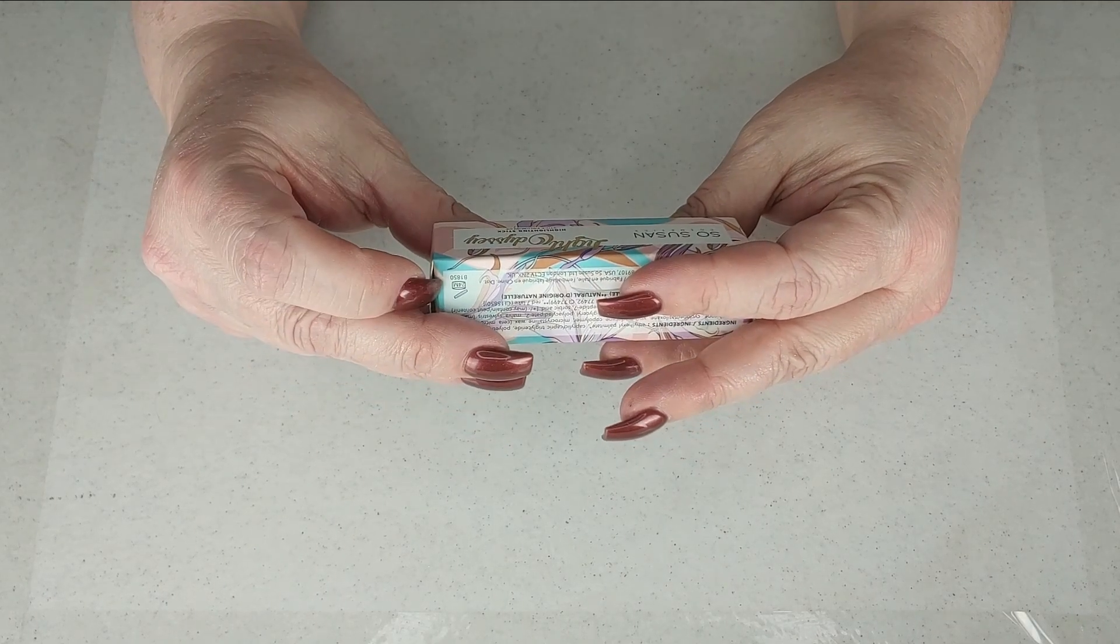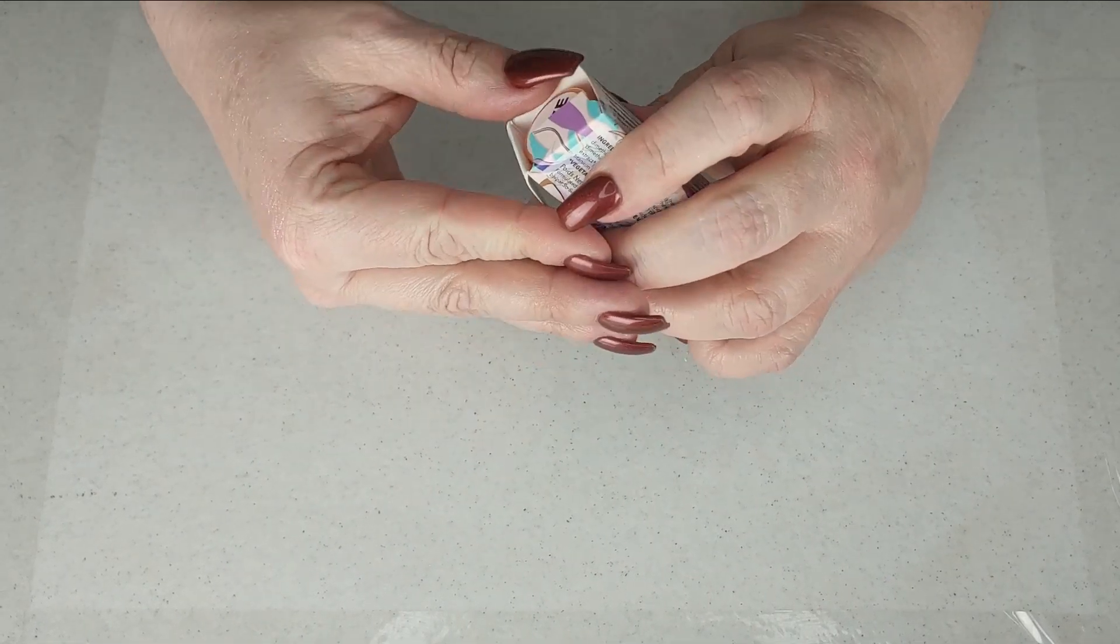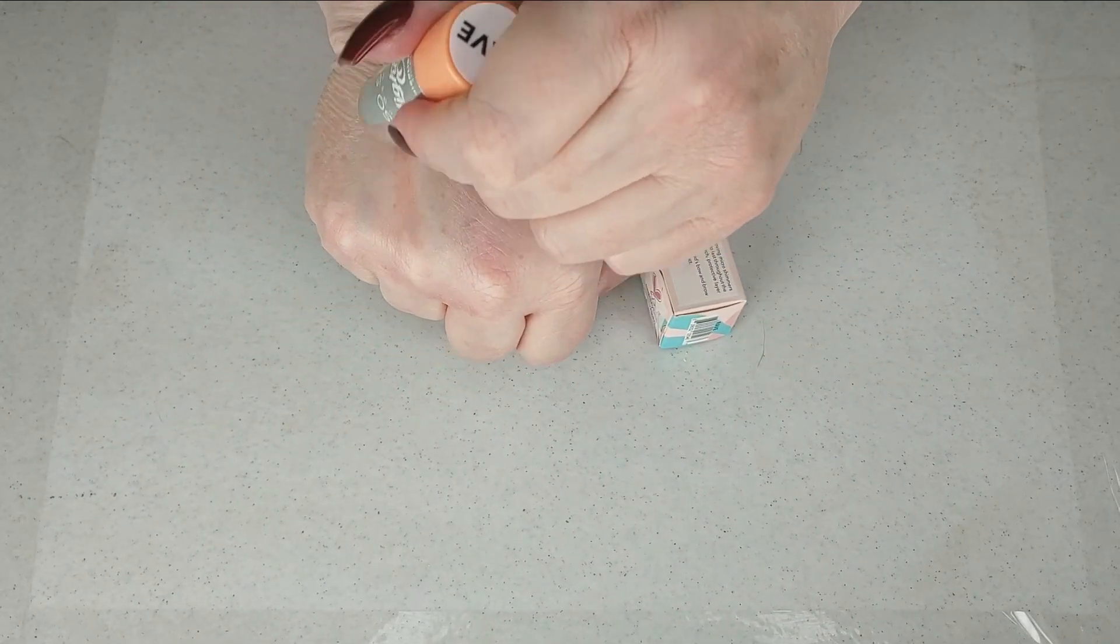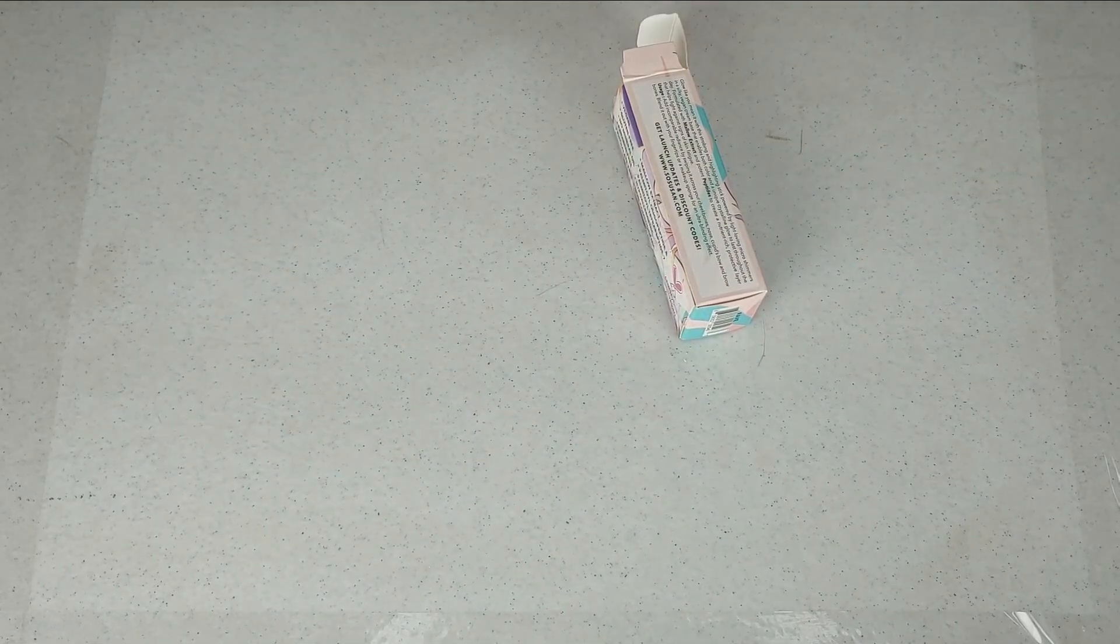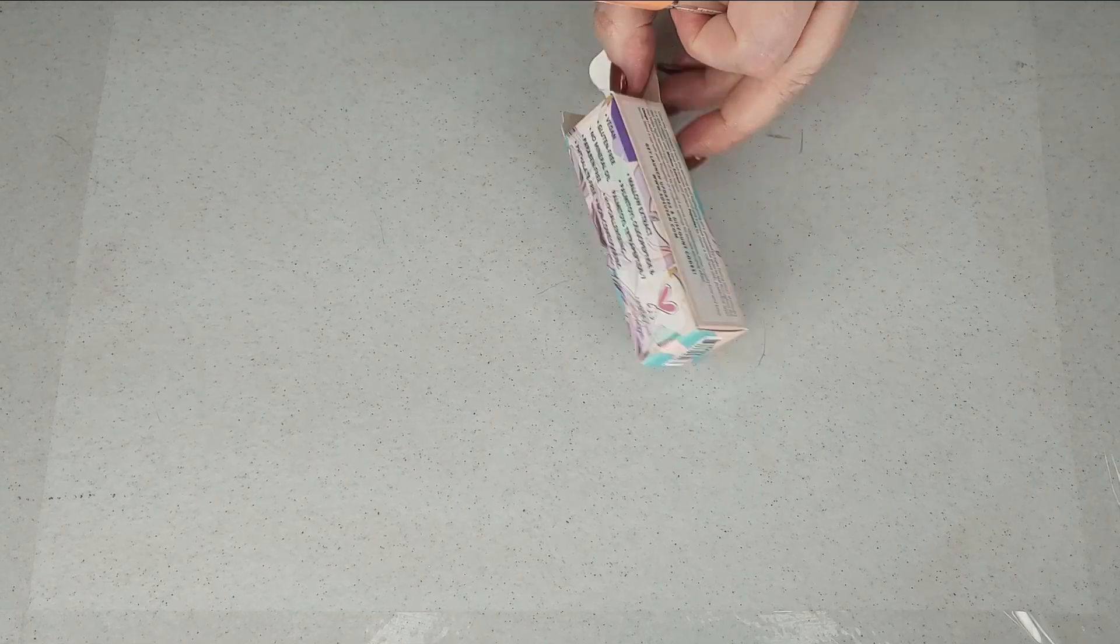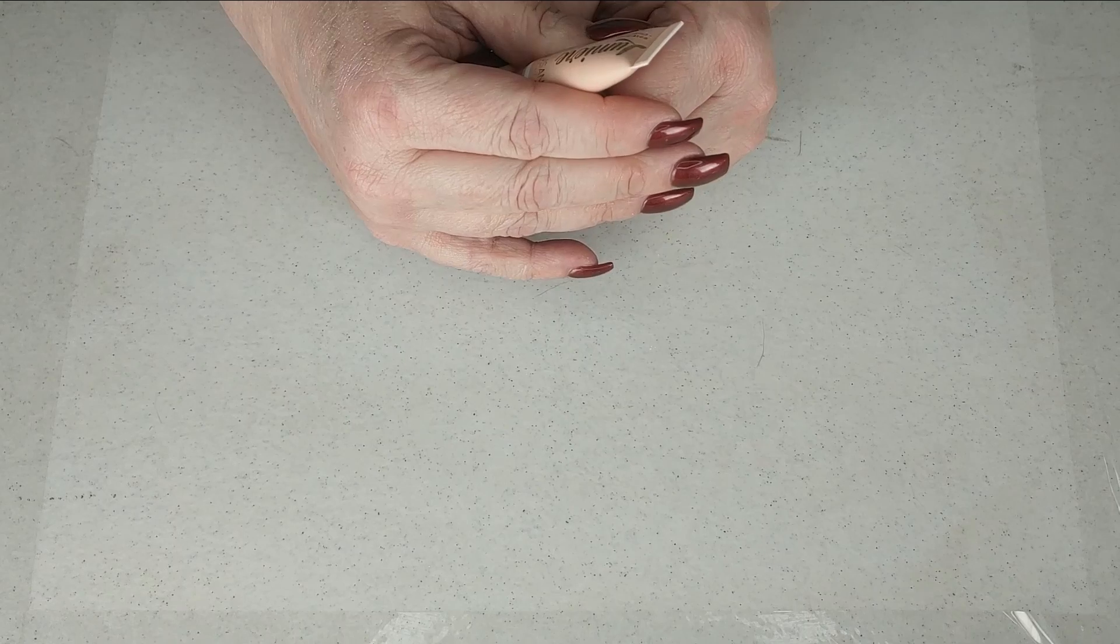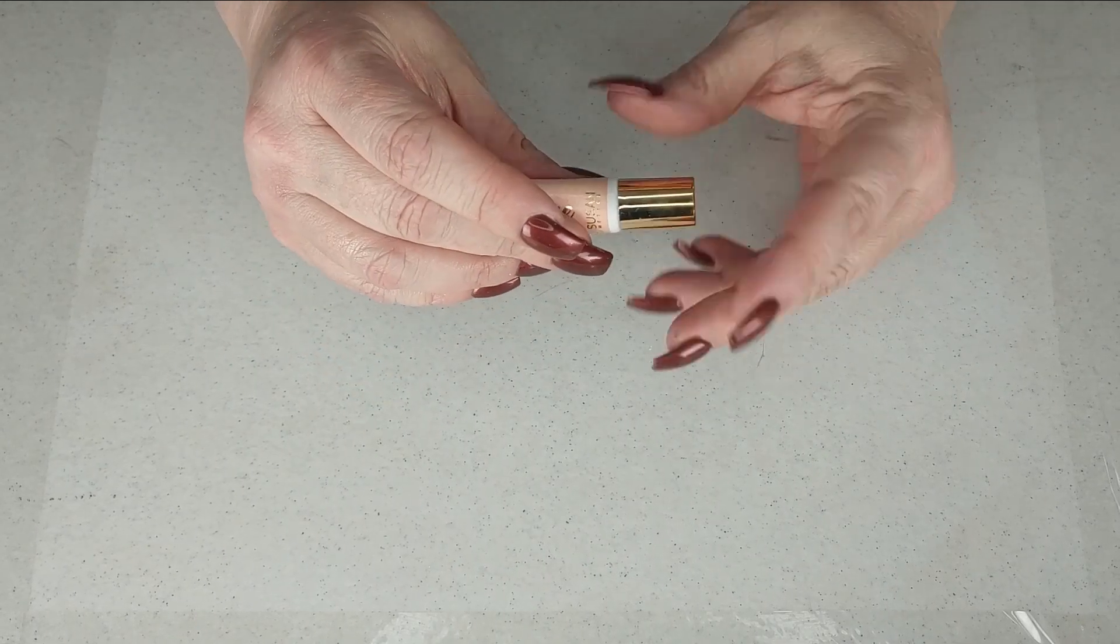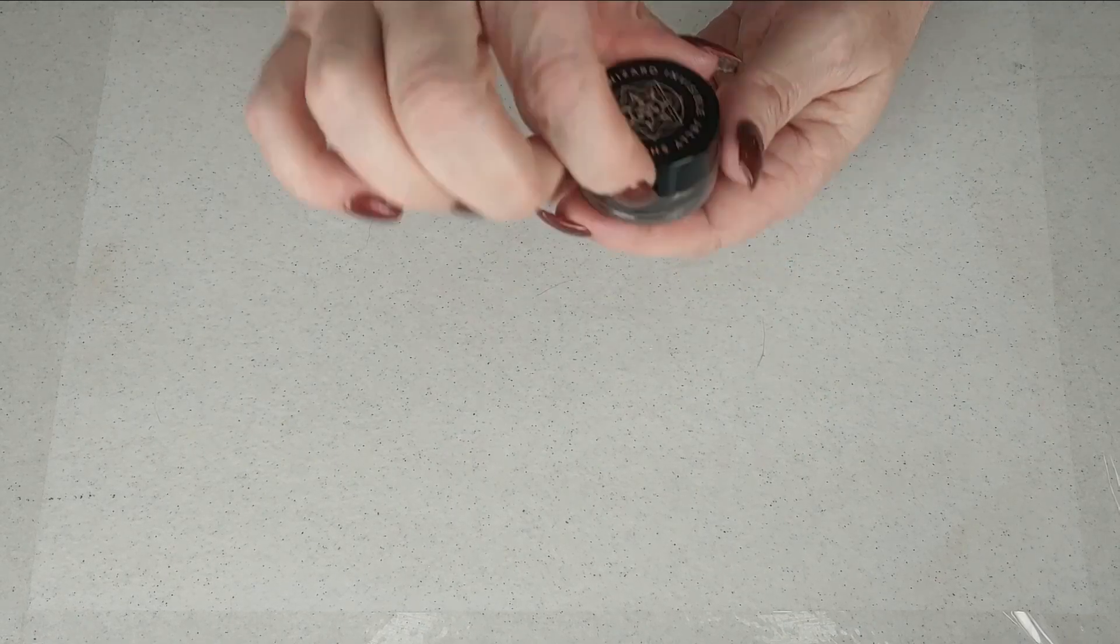This is Light Odyssey highlighting stick from So Susan. This is still in here because I haven't used it at all, I did swatch it but it's really pretty, it's like a peachy, would be great with a tan. I'm gonna throw that box away and then the last thing is the Lemire and this is from So Susan also and this is a rose gold liquid highlighter. It's really pretty, it's more pinky gold than rose gold.